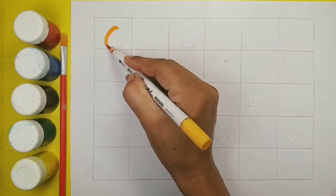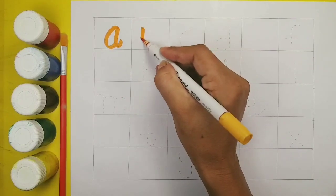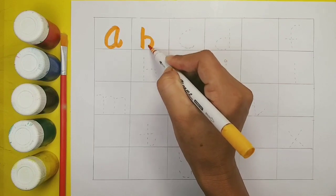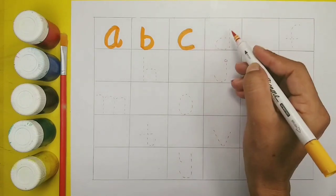A, A for apple. B, B for ball. C, C for cup.